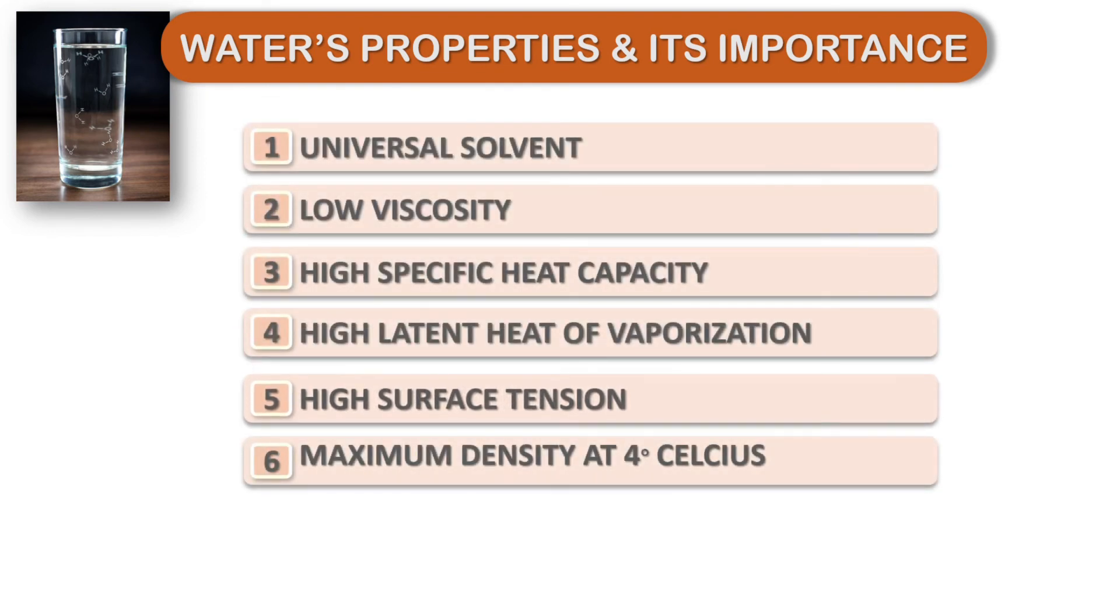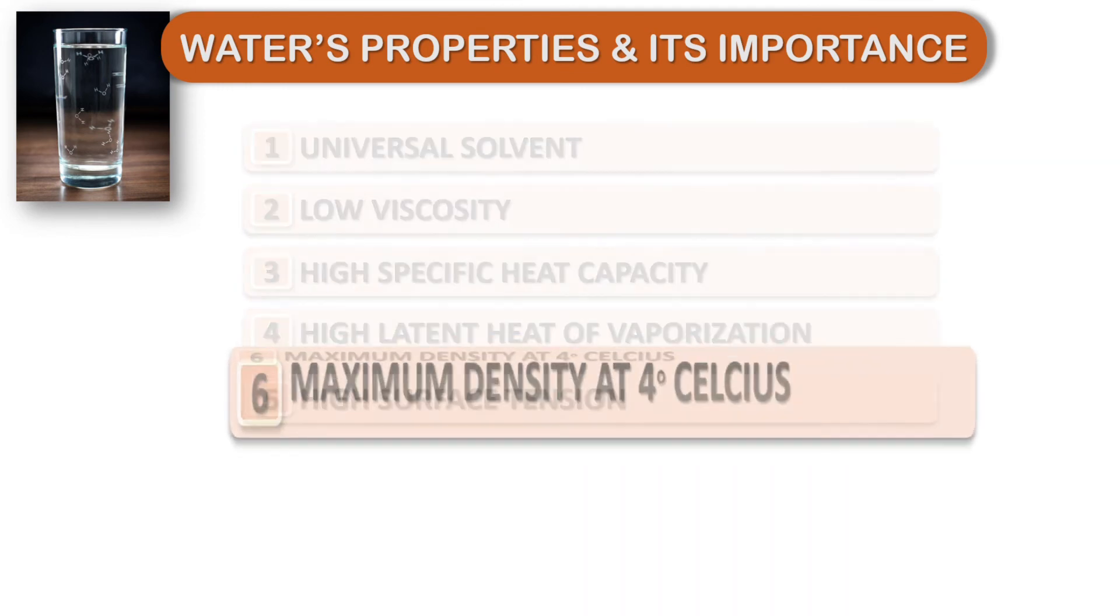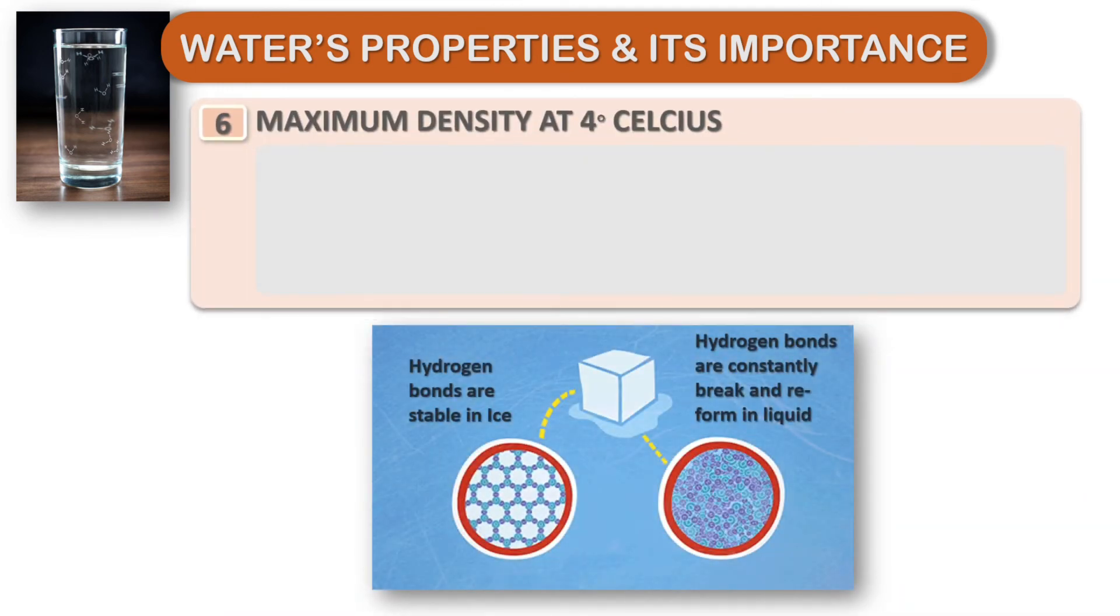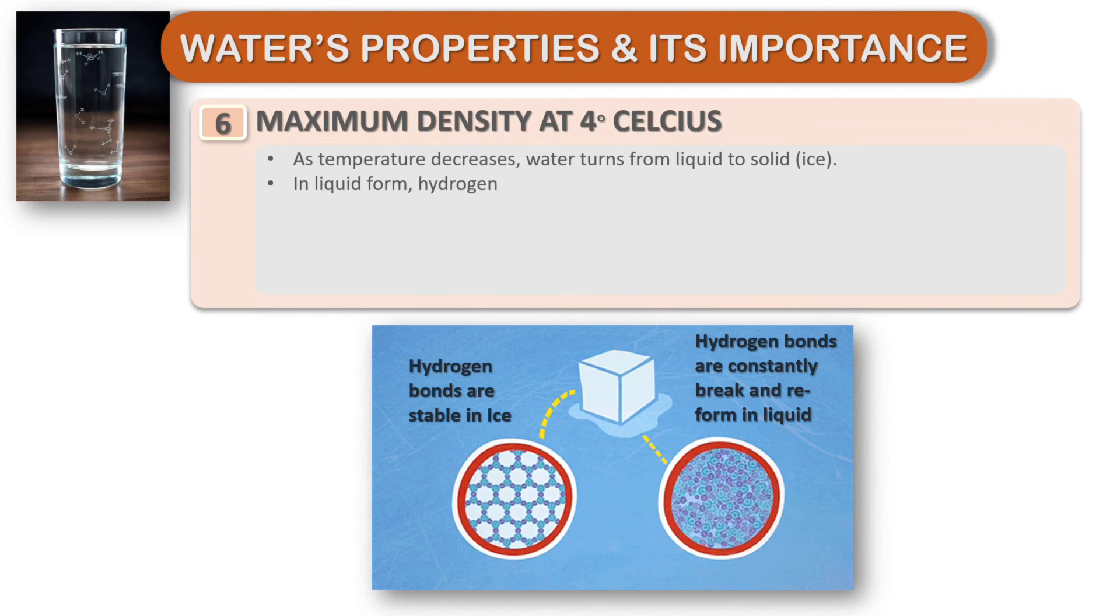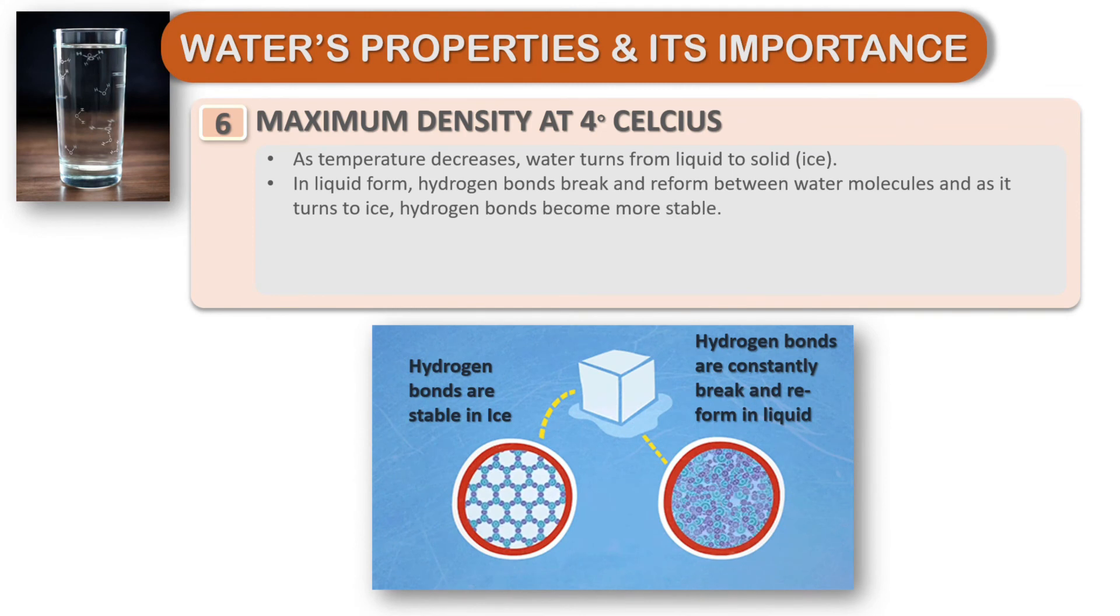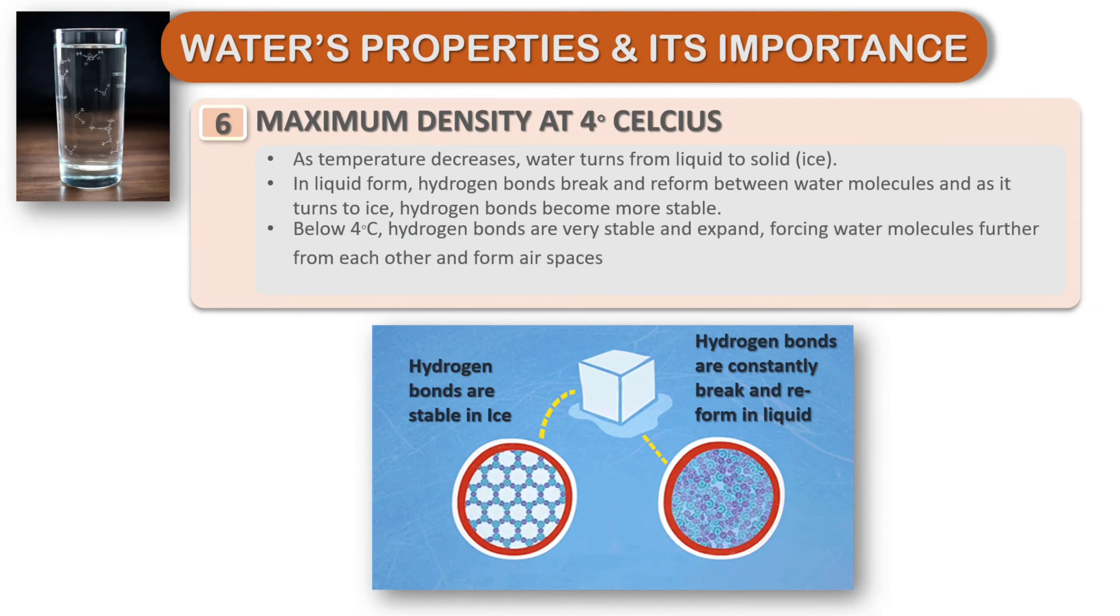The last property of water is that water has maximum density at four degrees Celsius. As temperature decreases, water turns from liquid to solid or ice. In liquid form, hydrogen bonds break and reform between water molecules. As it turns to ice, hydrogen bonds become more stable. Below four degrees Celsius, hydrogen bonds are very stable and expand, forcing water molecules further from each other and forming air spaces between water molecules.